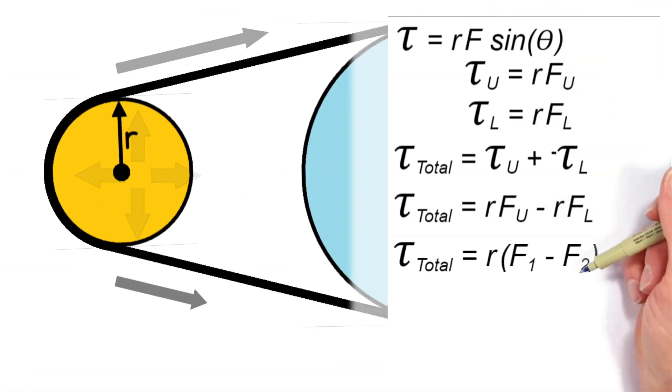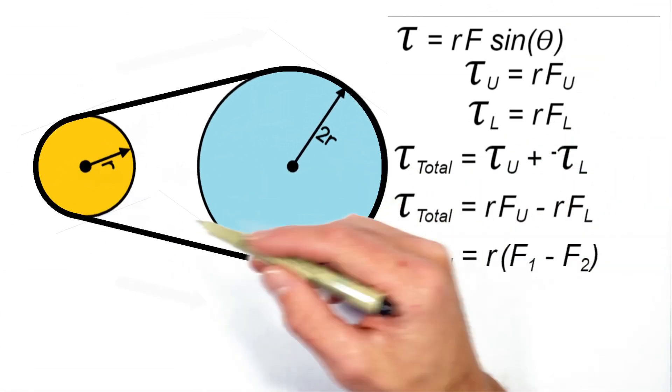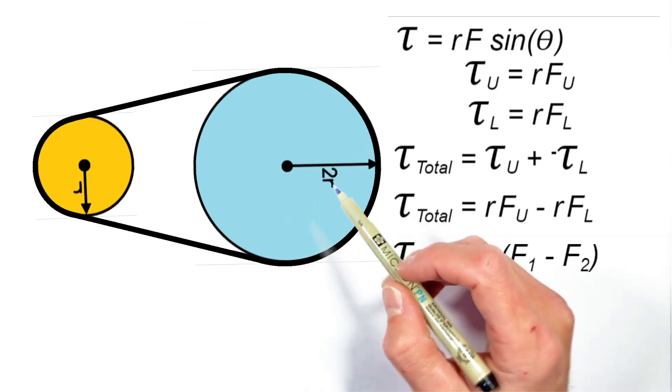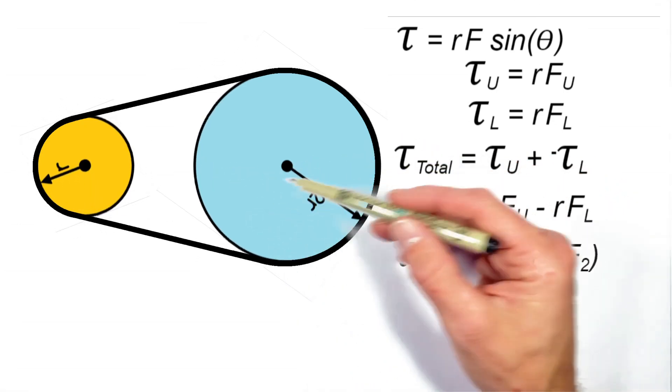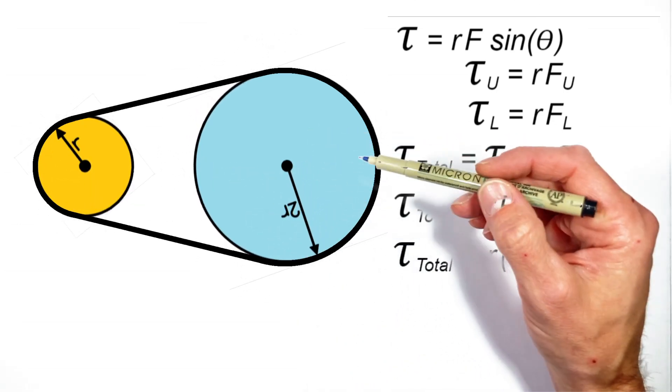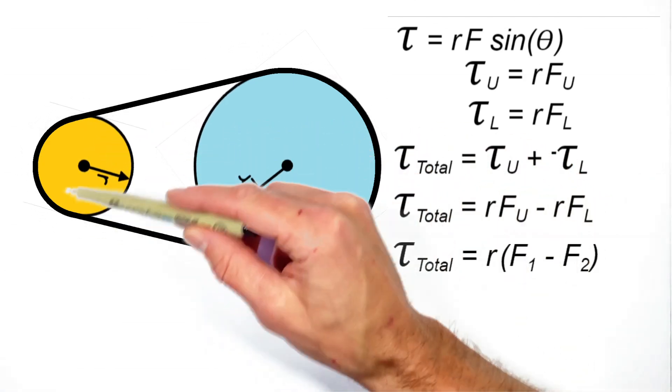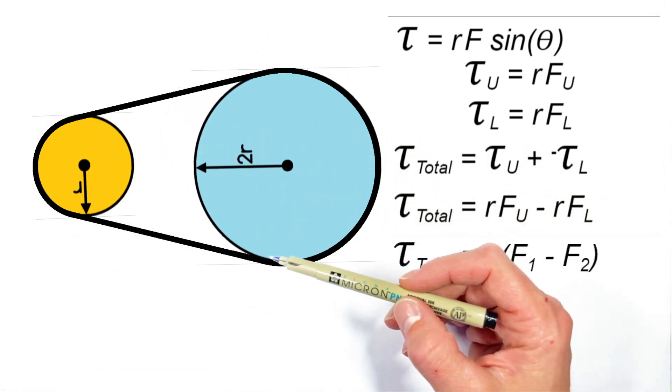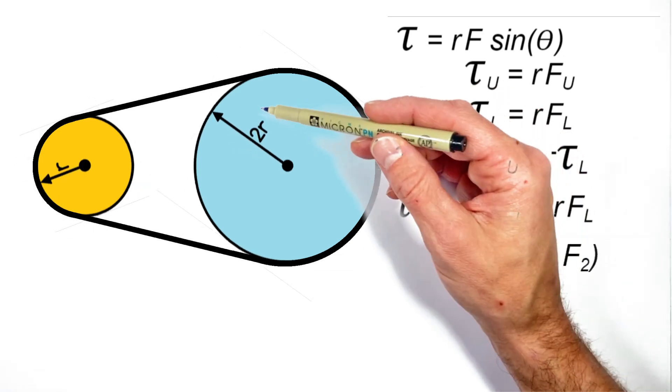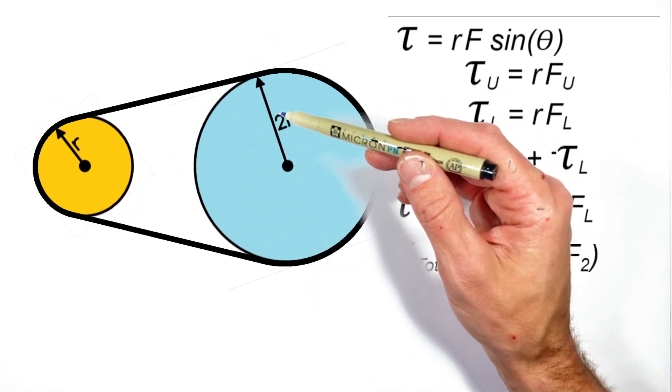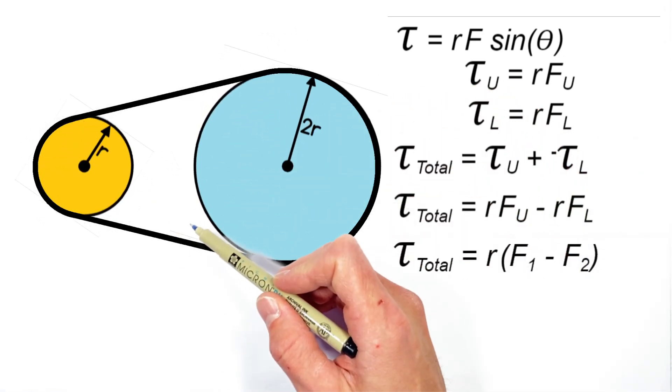Now this whole discussion is focused on the output pulley of our little assembly here, but realize that everything works the same way over here at the input. The only difference being, rather than a difference in tensions producing a net torque like at our output, at the input the net torque produces a difference in the tensions in the belt.